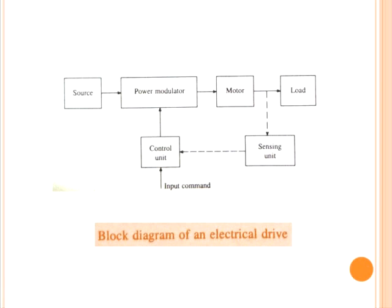Controls for the power modulator are built into the control unit, which usually operates at a very much lower voltage and power level. In addition to operating the power modulator as desired, it may also generate commands for the protection of the power modulator and motor. Input command signals which adjust the operating point of the drive form an input to the control unit. Sensing of certain drive parameters such as motor current and speed may be required either for protection or for closed-loop operation.